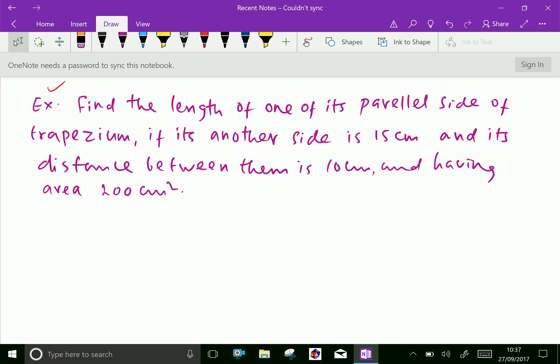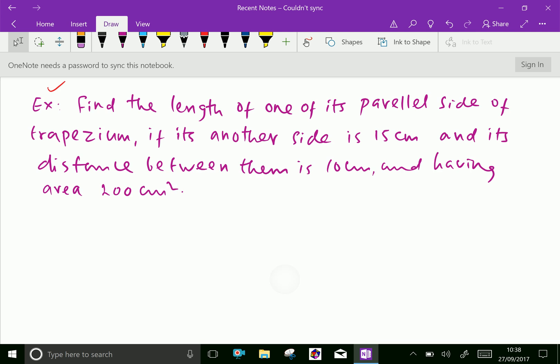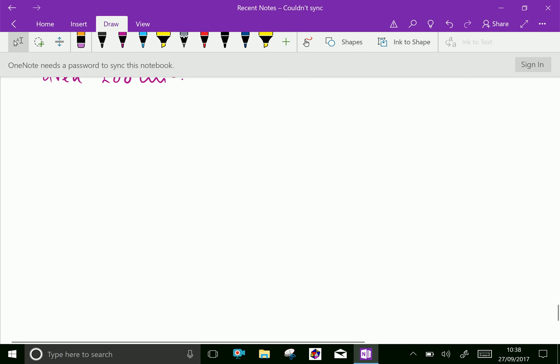Find the length of one of its parallel sides of a trapezium, if its another side is 15 centimeter and its distance between them is 10 centimeter, and having area 200 centimeters squared.